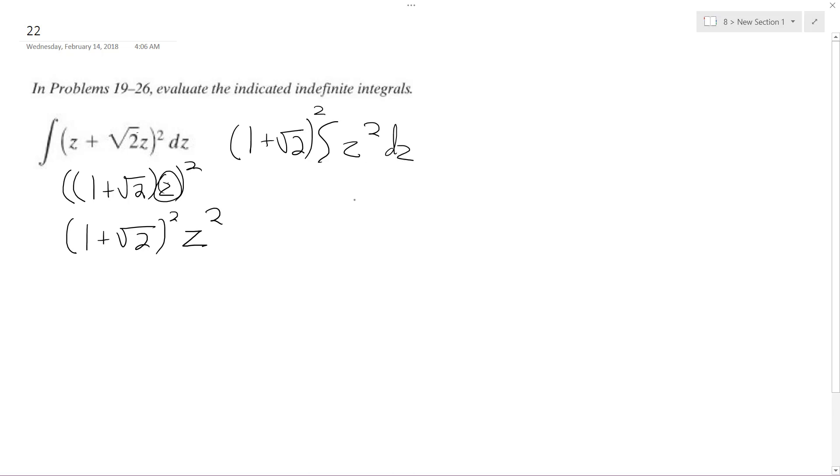Alright, so now we can integrate. If we integrate, we get 1 plus square root of 2 squared. And then we get z raised to the 2 plus 1 over 2 plus 1 plus C.